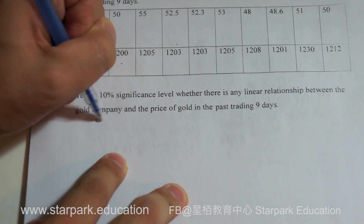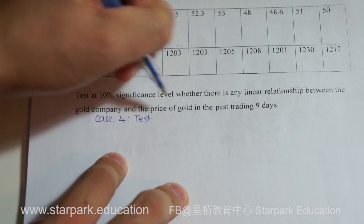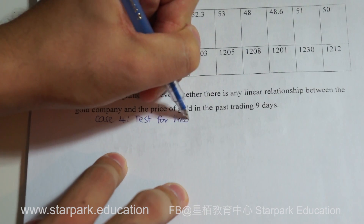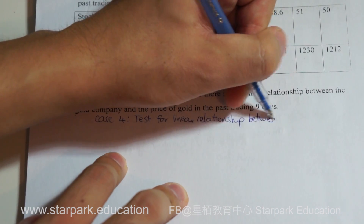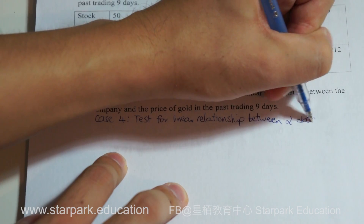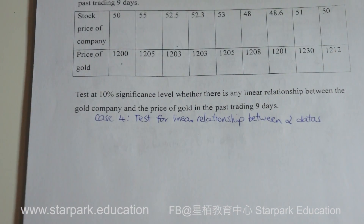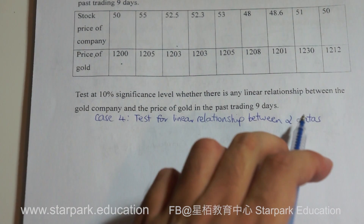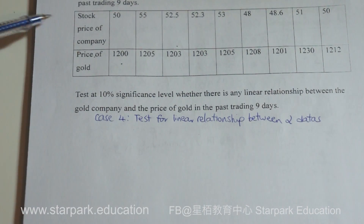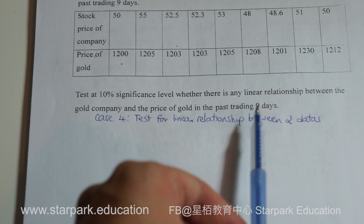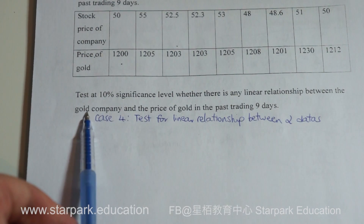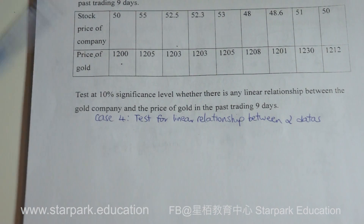Case 4 is a test for linear relationship between two datasets. These represent population data — there are many trading days for stock price and a long history of gold price. So to find out whether there is any relationship, we have to select a sample. These nine days are the sample.